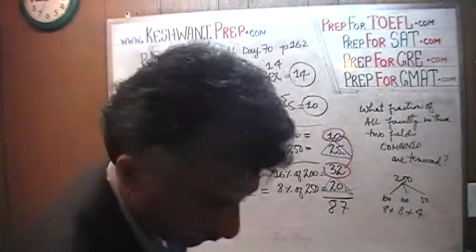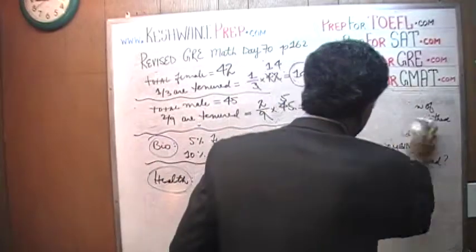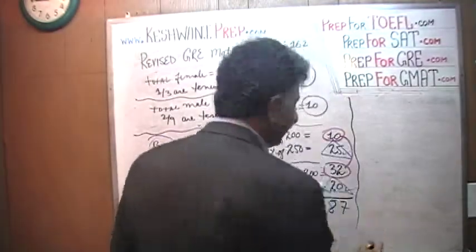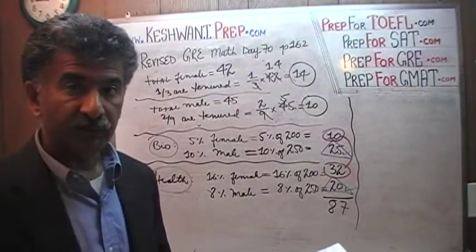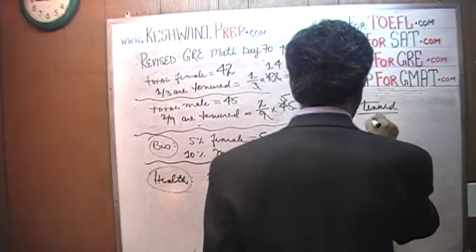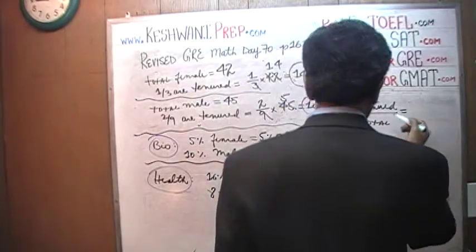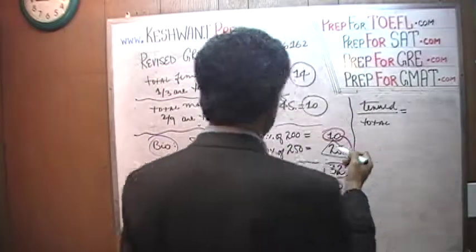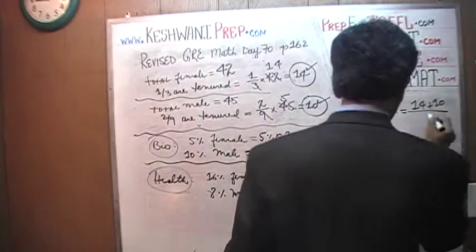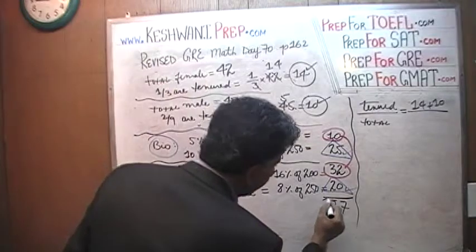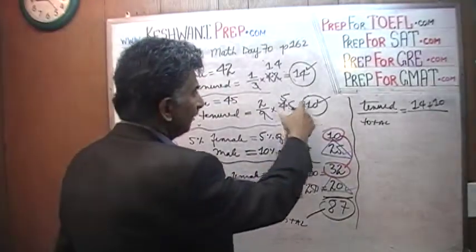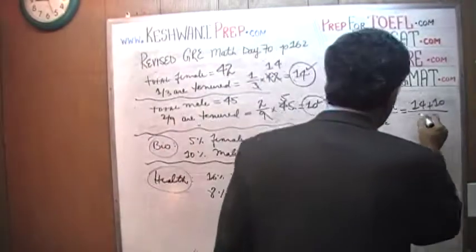Now we have to do the last step — find the ratio of tenured professors as a fraction of the total faculty. Tenured over total: we know there are 14 tenured female and 10 tenured male, so that's 14 plus 10 over the total. The total is 87 faculty in the two departments combined, of which 24 are tenured. That is our answer.